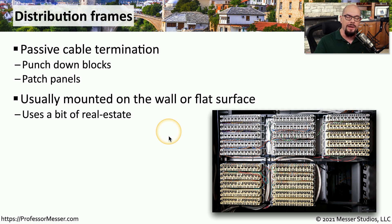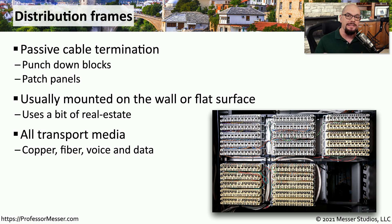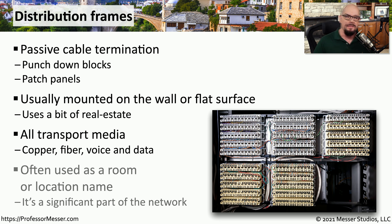This is usually located on the wall. We sometimes will mount plywood and then put our punchdown blocks on top of the plywood. This is also a great central location to bring in all of the network connections, which makes it very easy when you need to extend those network connections to other devices. That means all of your copper, fiber, and any other network connections are probably going to be associated with this distribution frame. This is so common that the name of the room is also used as a reference to this distribution frame.